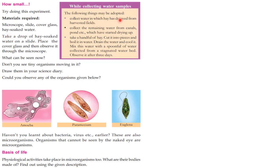The following things may be adopted. Collect hay soaked water in which hay has decayed from harvested fields. Collect the remaining water from the canals, pond etc. which have started drying up. Take a handful of hay, cut it into pieces and boil it in water. Drain the water and cool it. Mix this water with a spoonful of water collected from a stagnated water bed. Observe it after 3 days.